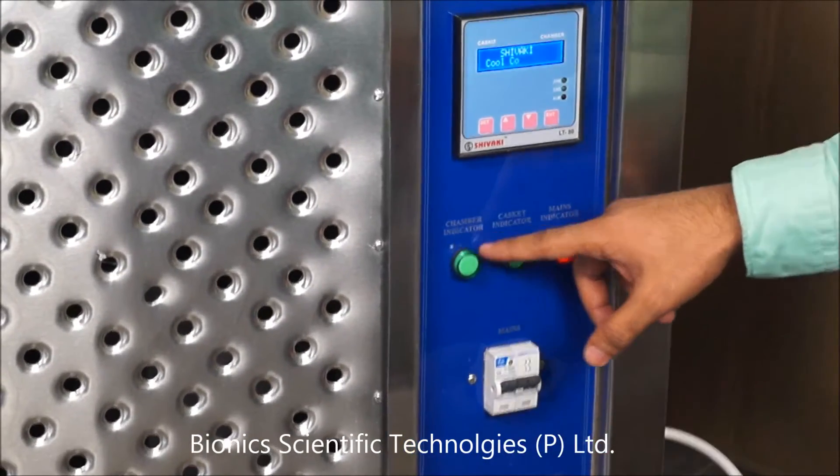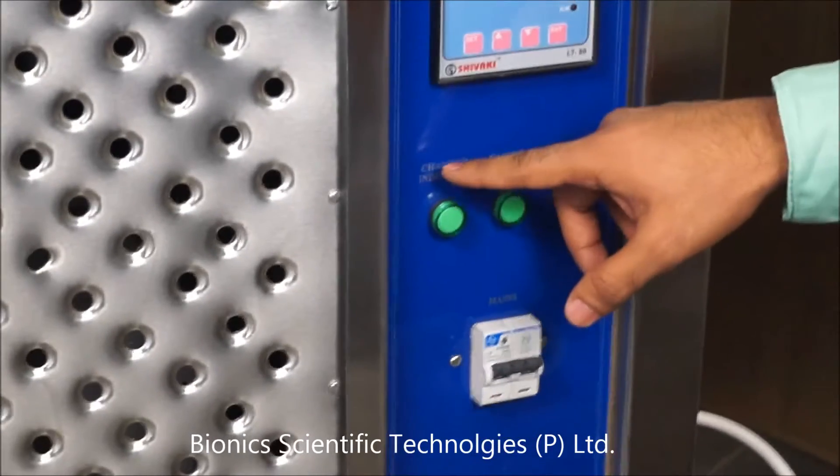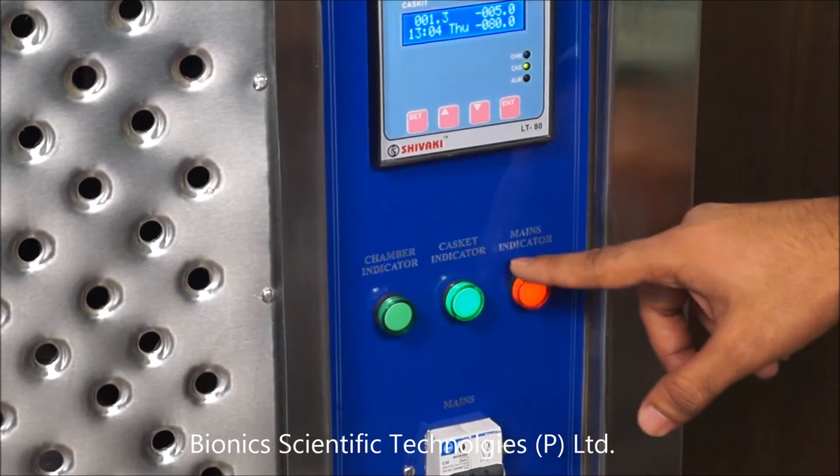And these are the three indicators. This one is for chamber, this one is for cascade, and this one is for mains.